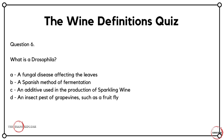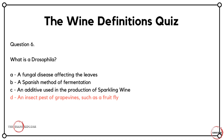Question six continues with words I'm going to struggle to say. What is Drosophila? Is it A, a fungal disease affecting the leaves? B, a Spanish method of fermentation? C, an additive used in the production of sparkling wine? Or D, an insect pest of grapevines, such as a fruit fly? Pretty technical — you either know it or you don't. The correct answer here is D — it's an insect pest like a fruit fly.